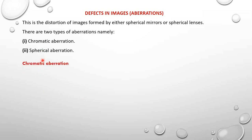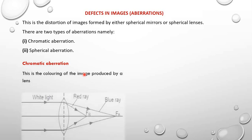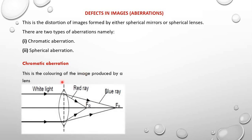Let's begin by looking at chromatic aberration. Chromatic aberration is the coloring of the images produced by a lens. If we have white light coming into the lens, it is going to be refracted. Because white light has different component colors, those different components are going to be refracted by different amounts.